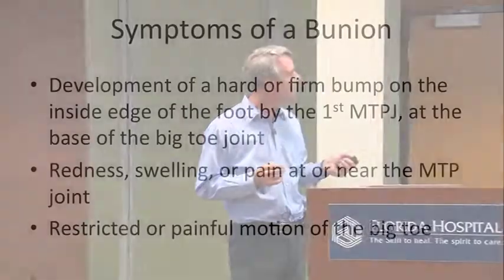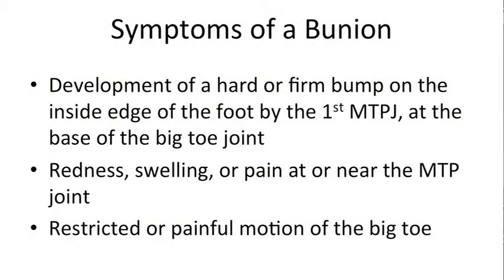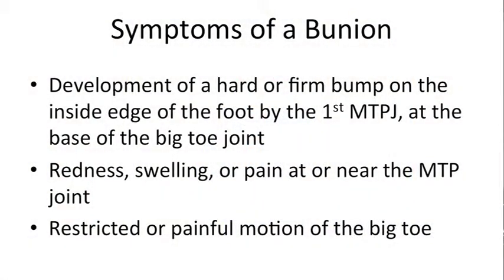The big toe continues to drift toward the second toe. The first symptoms involve the medial side of the big toe joint — the side closest to the center of your body. Because the foot gets wider, it starts to rub into your shoes. There are small nerves and vessels right under the skin, and when those nerves rub against the shoe and the bone underneath, it starts to hurt. Sometimes there's redness or swelling, because you can develop an adventitious bursa — a little fluid-filled sac, almost like a water balloon, that cushions the area.